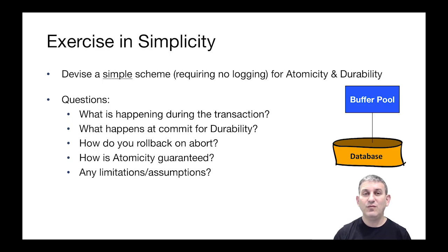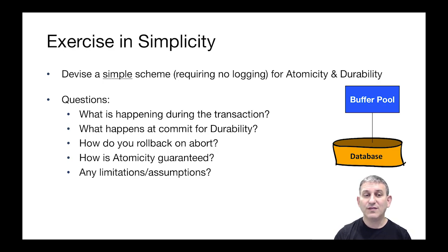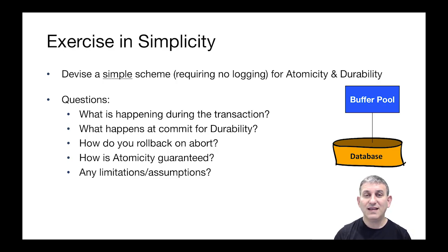Let's start with the simplest recovery scheme we can think of. We want to devise a simple scheme — the simplest one possible, preferably one that requires no logging — and we want it to achieve atomicity and durability. The questions to ask are: what's happening during the transaction, what happens at commit for durability, how do you roll back on abort, how is atomicity guaranteed, and are there any limitations or assumptions? You can pause now and think about that; we'll go through one together on the next slide.